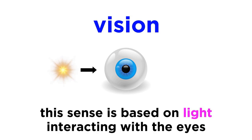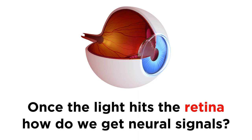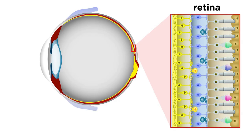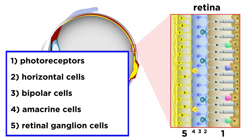Vision is based on light interacting with the eyes. The process by which light hitting the retina is converted into neural signals is quite complex, to say the least. To begin to understand this, let's zoom in a bit on the retina. We see five layers of different types of neurons: receptor cells, horizontal cells, bipolar cells, amacrine cells, and retinal ganglion cells.